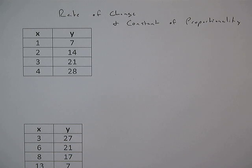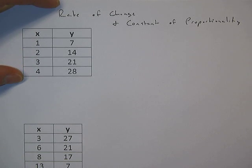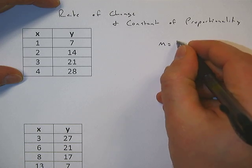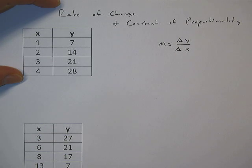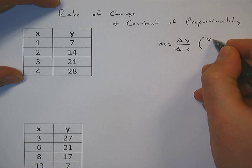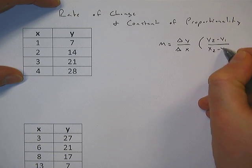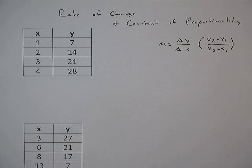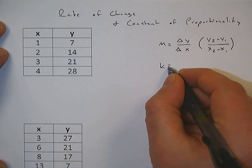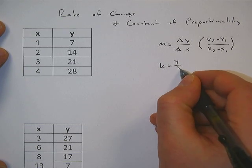Now the first thing we need to understand is what is rate of change and what is the constant of proportionality. The rate of change is just a ratio of the change in y over the change in x. We use the symbol delta in math to show change, and one way you could remember this is y2 minus y1 over x2 minus x1. Those familiar with slope understand that m is the same thing as slope. Change in y equals y2 minus y1. The constant of proportionality we use the letter k and it's just y over x.